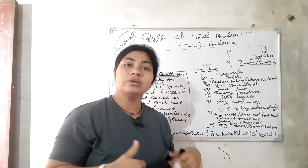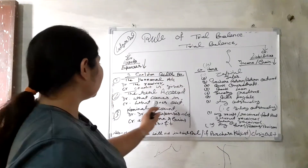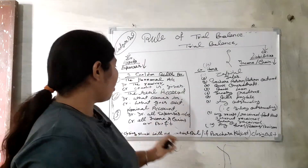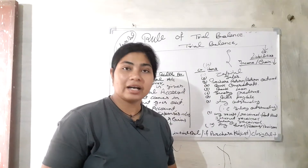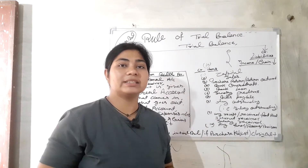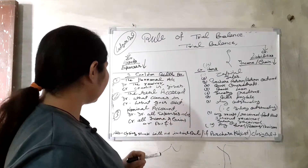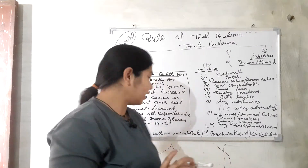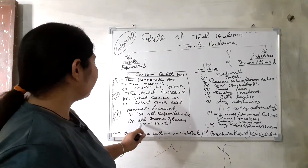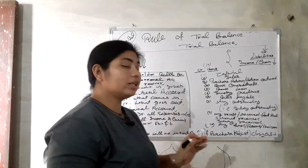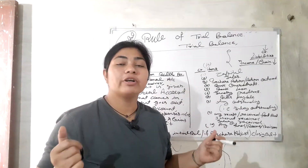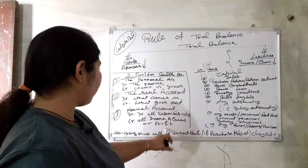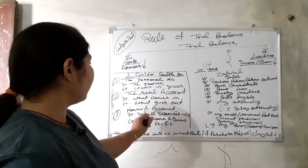The third is the Nominal Account: in debit, all expenses and losses are included — whatever expenses or losses there are, they go to the debit side. In credit, all income and gains — whatever income, profit, gain, or labh there is — all of that comes to the credit side of the nominal account.